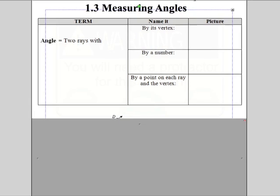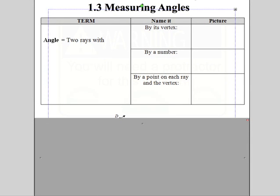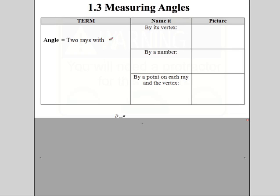Talking about angles. Last time we were measuring segments; today on this section we're going to measure angles. Let's define an angle. An angle is two rays with a common endpoint. You've seen angles before — let's just have the formal definition. They share the same endpoint. Obviously the picture is going to look something like this: here's a ray and here's another ray, and they have the same endpoint right there.